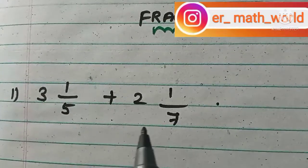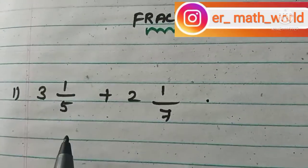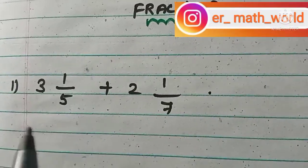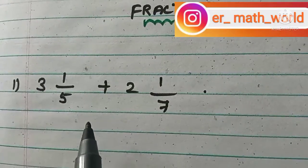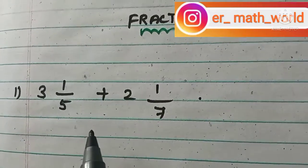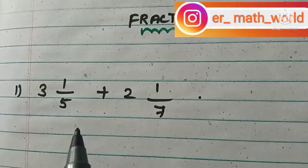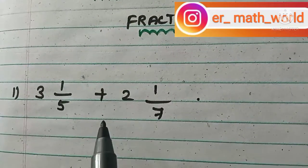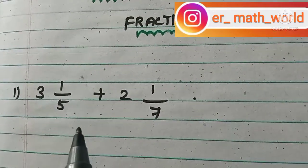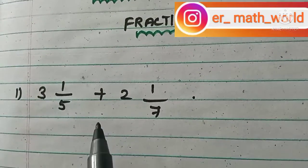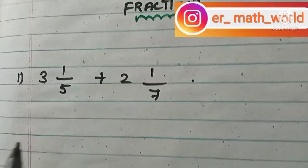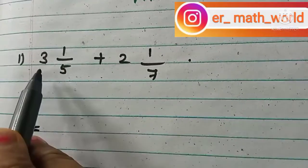This is one mixed fraction and this is another mixed fraction. First we have to change these mixed fractions into improper fractions. In the last video I showed you how to change mixed fractions into improper fractions — that video's link is in the description box. First we will change 3 and 1/5.